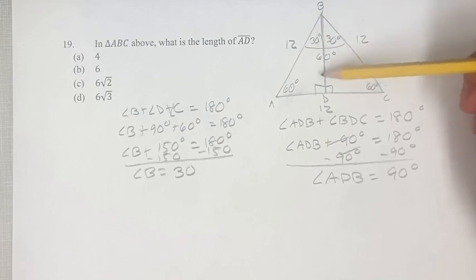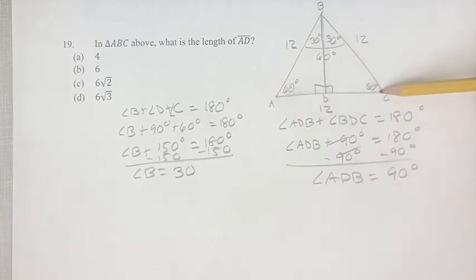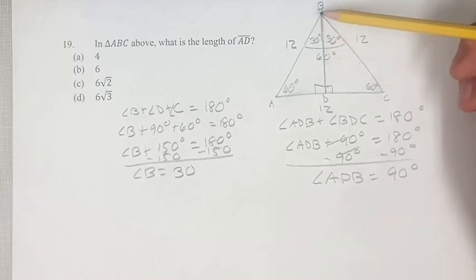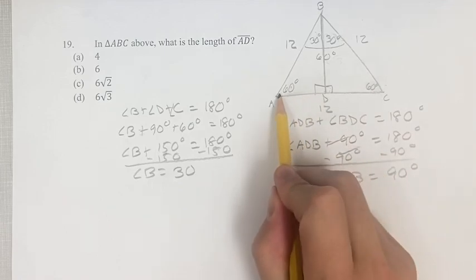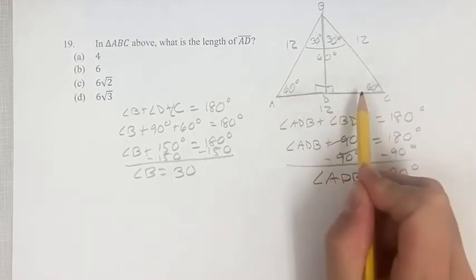And this line is bisecting the side AC. How do we know this? Well, because it's creating two equal angles. Therefore, it's going to create two equal projections of those angles, two equal sides.